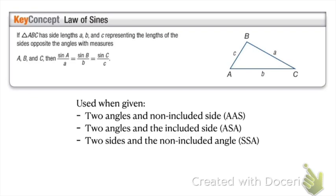If we have a triangle ABC with side lengths a, b, c, then we set it up as proportions: sine of angle A over a equals sine of angle B over b, which equals sine of angle C over c. Another way to do this is to flip them all. If we're looking for angles, we set it up this way. If we're looking for missing side lengths, we flip them all, because they are proportions.